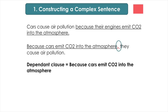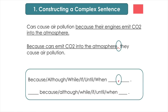That's because the sentence begins with the dependent clause — that's the part of the sentence that depends on the other part. You can't just say 'because cars emit CO2'; you must continue your sentence. It's easy to remember: when your sentence starts with because, although, while, if, until, or when, you need a comma. Whenever the dependent clause comes first, you separate it with a comma. If these words are in the middle of the sentence, you don't need a comma.